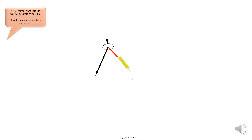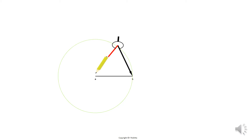Start by placing your compass at point A and stretch it the full length of line AB and draw a light construction circle. Now you will place your compass at B and stretch it to A and draw a light construction circle similar to the one in the previous step.